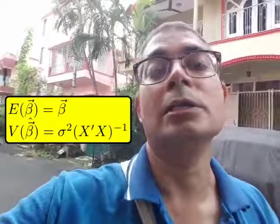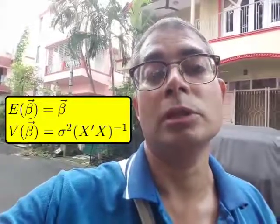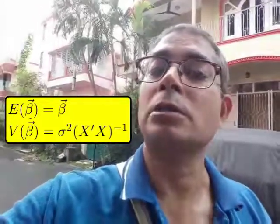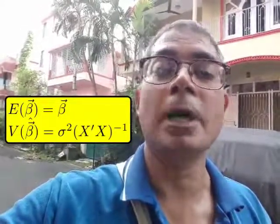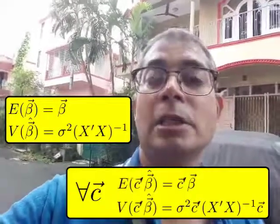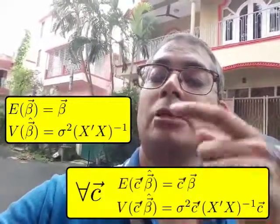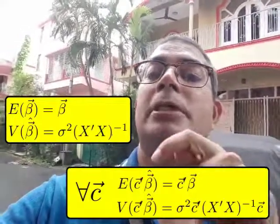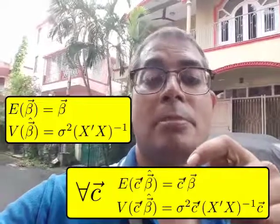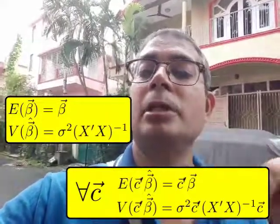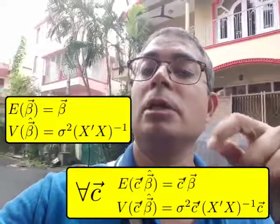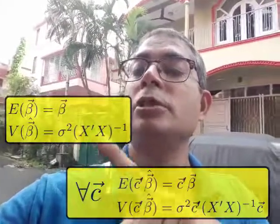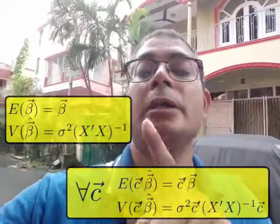Similarly, if I take C equal to E2, then C prime beta will be beta 2. Now, if I work analogously with C prime beta hat, then quite obviously, following the same result, we can immediately see that whatever C I choose, expectation of C beta hat will be C prime beta, and variance will similarly be a quadratic form, with this thing sandwiched between a C prime here and a C here.